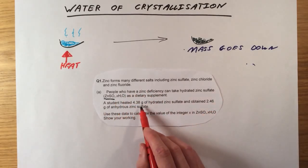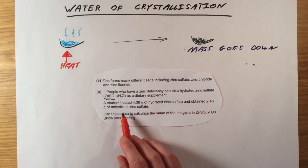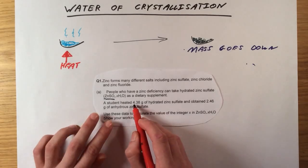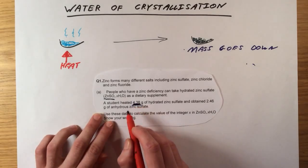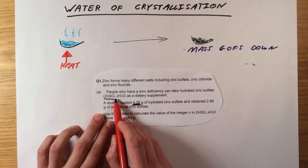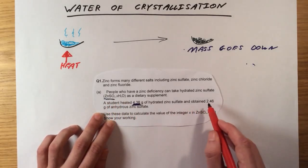So a student heated 4.38 grams of hydrated zinc sulfate and obtained 2.46 grams of anhydrous zinc sulfate. Use these data to calculate the value of the integer X in ZnSO4 XH2O. Show your working. So the important thing here is that we can't actually do anything with this number itself at the moment. That is for the hydrated zinc sulfate. We do not know what the MR of the hydrated salt is, so we cannot use that at the moment. What we can use is this.